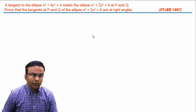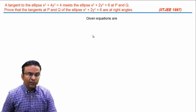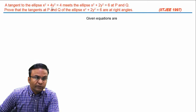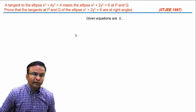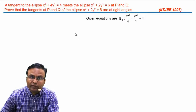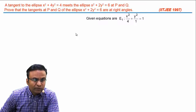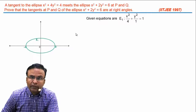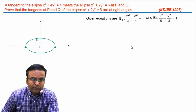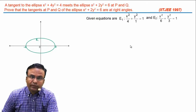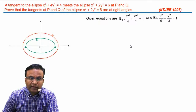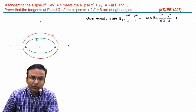Let's draw the diagram according to the data. To draw the ellipses in standard form: for the first equation, dividing throughout by 4 gives x²/4 + y²/1 = 1. Here a = 2, b = 1, with vertices at 2 and -2. The second ellipse E2 is x²/6 + y²/3 = 1, with vertices at √6 and -√6. E2 is bigger because values of a and b are both greater than those of E1.